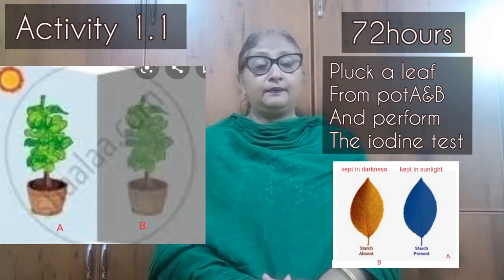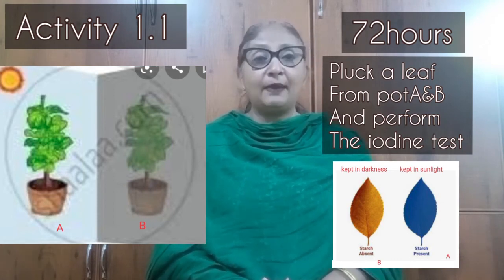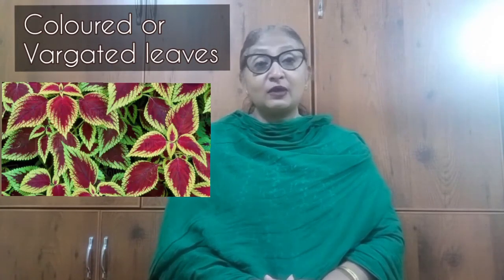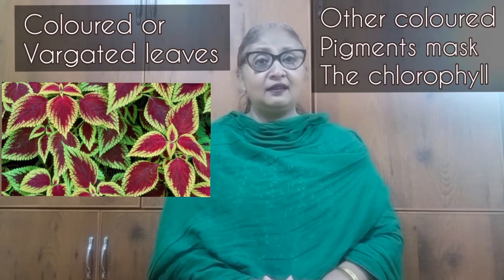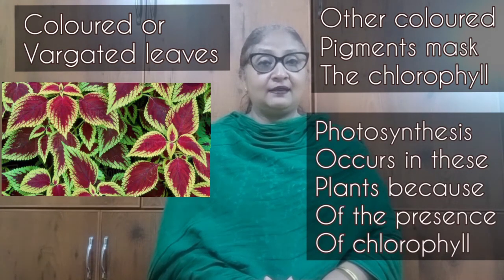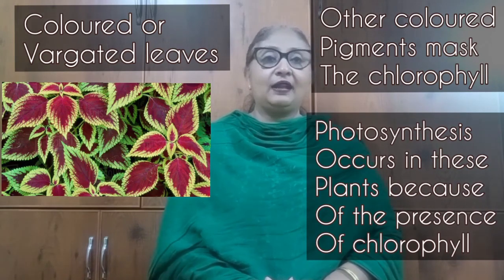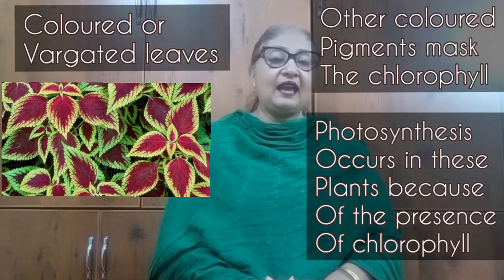What can we conclude? The conclusion is that sunlight is necessary for photosynthesis — only if photosynthesis happens, starch is produced. Have you seen variegated leaves? Variegated leaves means leaves with many colors — spotted white, yellow, red, brown, etc. You cannot see the green color prominently there. Do these plants perform photosynthesis? Yes. The other pigments which are more prominent mask chlorophyll, but since chlorophyll is still present, they can perform photosynthesis.